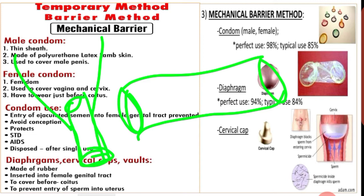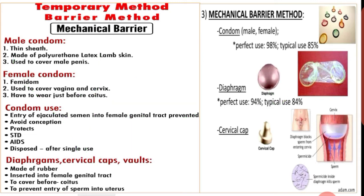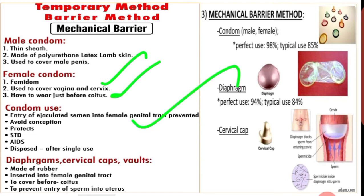The femme shield provides protection from sexually transmitted diseases also. The female condom, also called femidom or femme shield, is used to cover the vagina and cervix and is worn just before sexual activity. The condom prevents entry of ejaculated semen into the female genital tract, avoids pregnancy, protects against sexually transmitted diseases and AIDS, and is disposable — a use-and-throw, single-use method.